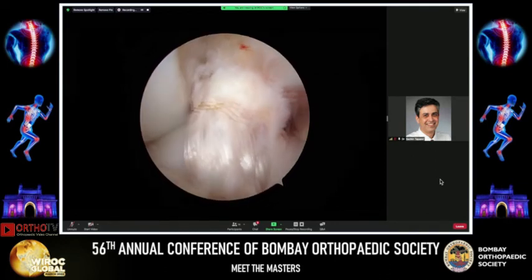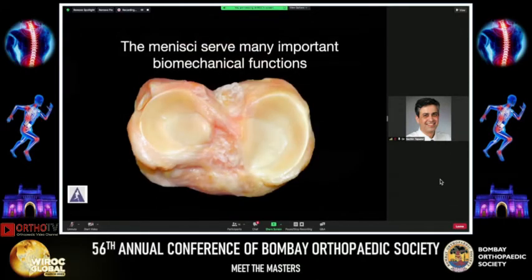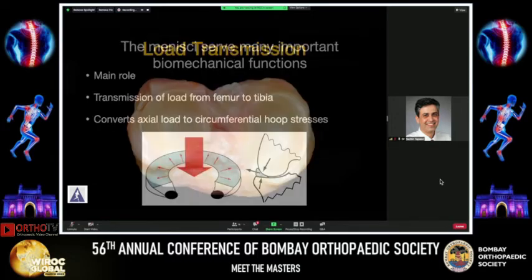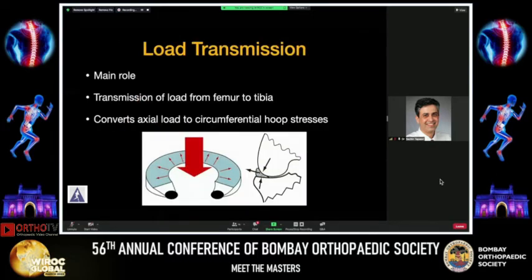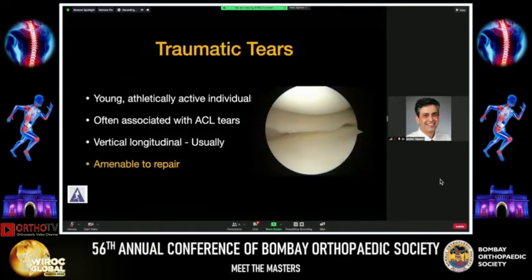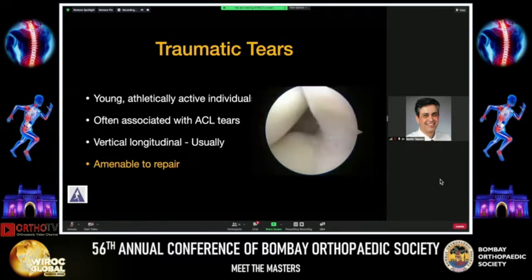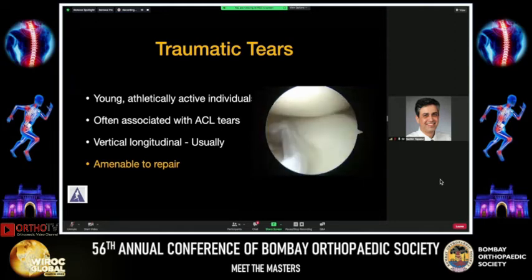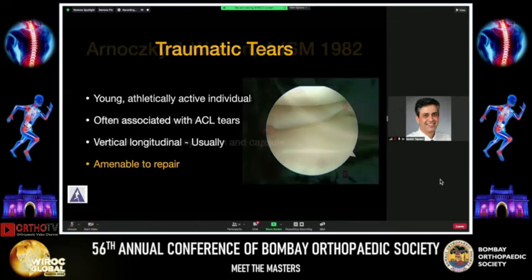We then proceed to the ACL reconstruction. The meniscus is important and serves many biomechanical functions. Load transmission is probably one of the more important roles. The meniscus roots help anchor the meniscus to the tibia and convert axial load to circumferential hoop stresses. Traumatic tears are important because they occur in young athletically active individuals, are often associated with ACL tears, and usually are of the peripheral longitudinal morphological variety. These are amenable to repair, and hence we do not leave any opportunity to repair such traumatic tears.